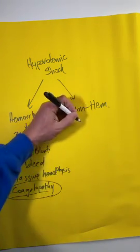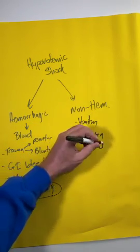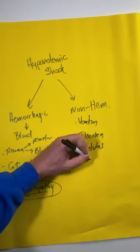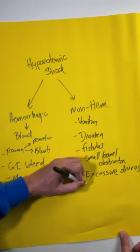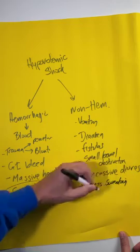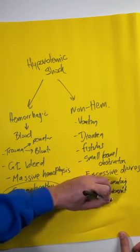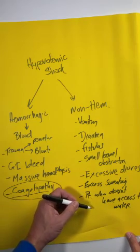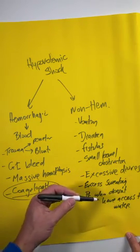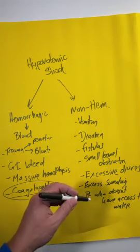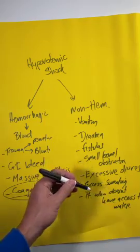We can also have non-hemorrhagic causes from vomiting, diarrhea, fistulas that will not stop putting out fluid, from small bowel obstructions, excessive diuretic use, environmental exposure with excess sweating, and don't forget about the patient who doesn't have access to water. This might be a patient who's hospitalized with dementia or might be a person who's in a nursing home and their caregivers aren't giving them fluids. This is a situation where the person might become dehydrated because they didn't have access to water.